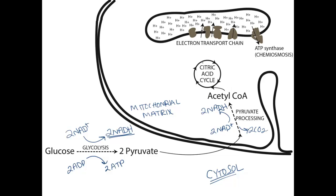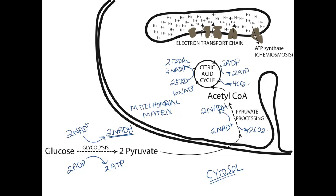That acetyl-CoA then goes through the citric acid cycle, where we generate a little more ATP, as well as some carbon dioxide, and most importantly, more electron carriers. We reduce two molecules of FAD and six molecules of NAD+ to FADH2 and NADH. Note that so far we haven't generated much ATP — only a net of four ATP — so most of our ATP generation has yet to happen.